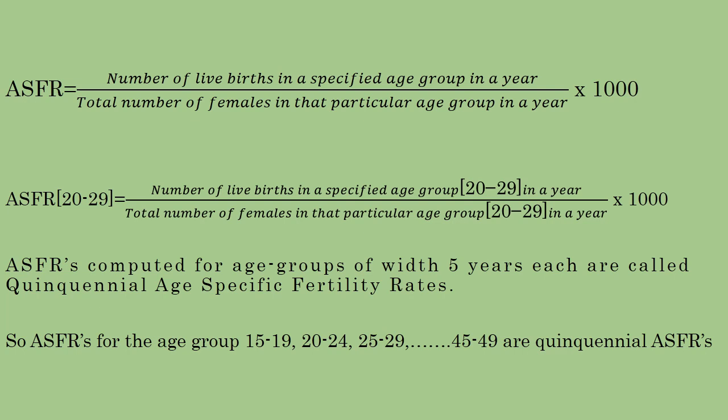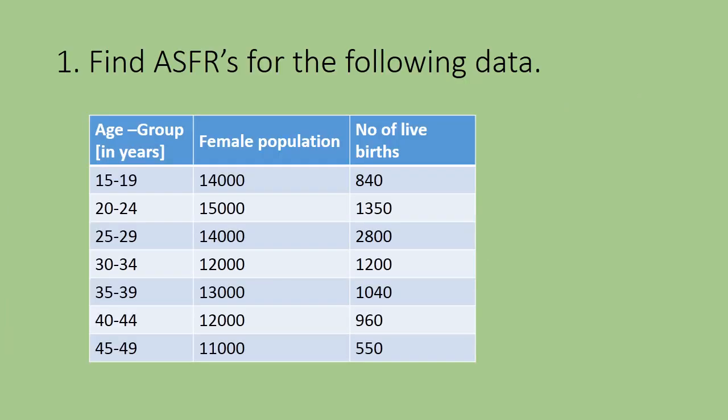If age-specific fertility rates are computed for age groups of five-year intervals, then that is called quinquennial age-specific fertility rate. For example, 15 to 19, 20 to 24, 25 to 29, up to 40 to 49 — these groups are referred to as quinquennial age-specific fertility rates.